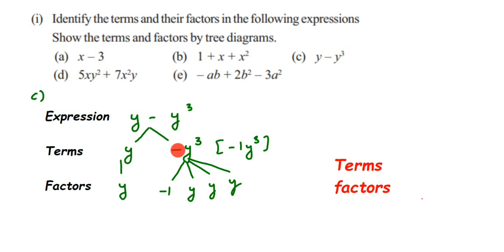So let's write down the terms and factors. There are two terms: one is y and second is minus y cube. The factors for the first term are y itself, and for the second term the factors are minus 1 into y into y into y.